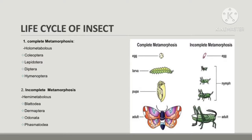However, incomplete metamorphosis consists of three stages: first is egg, second is nymph, and third is adult. The main difference between the two is that complete metamorphosis consists of a very active, voraciously eating larva and an inactive pupa, whereas incomplete metamorphosis consists of a nymph which resembles a miniature adult.